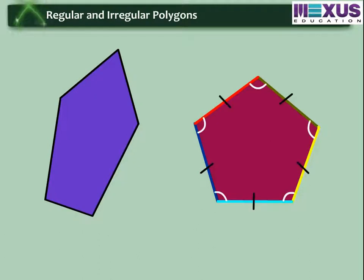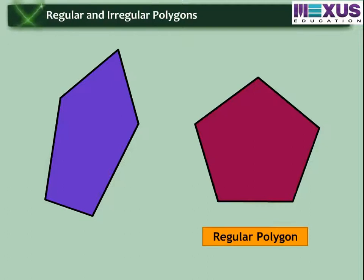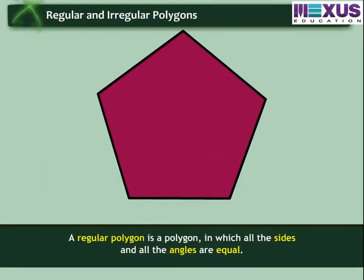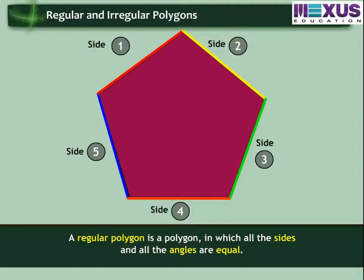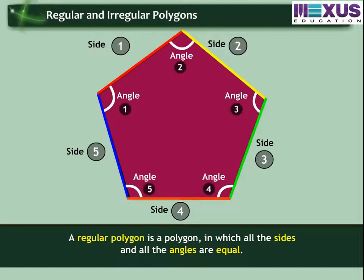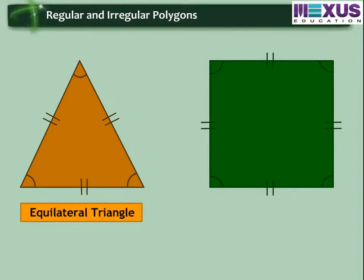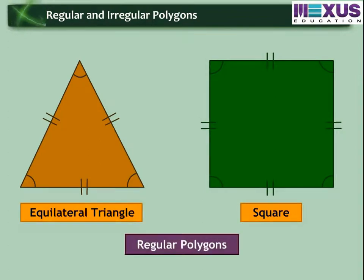On the basis of these, polygons can be classified as regular and irregular. A regular polygon is a polygon in which all the sides and all the angles are equal. For example, an equilateral triangle, a square, etc. are regular polygons.